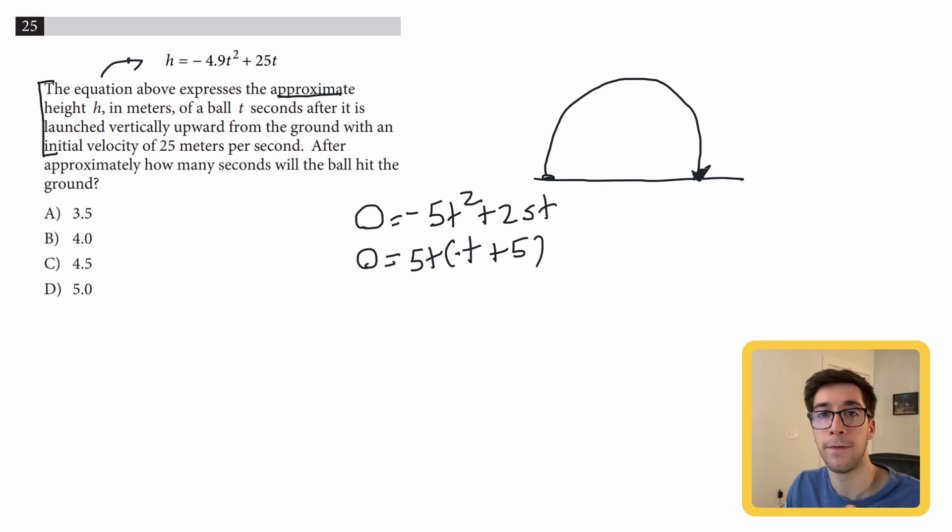Now we set both of these equal to zero and solve them independently. So five t equals zero, divided by five on both sides, we get t equals zero. That makes sense, time was zero when we started.